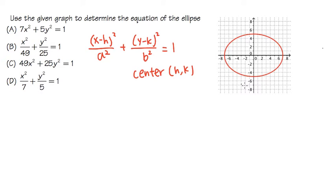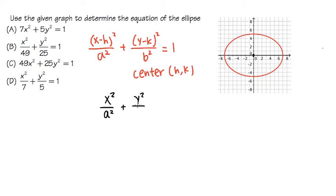As we can see in our situation here, this ellipse has its center at (0, 0). So h equals 0 and k equals 0. That means inside we will just have x squared over a squared, plus y squared over b squared, equal to 1.